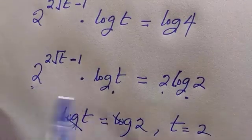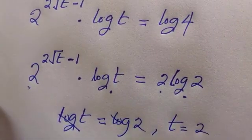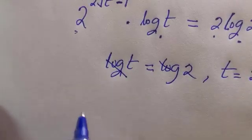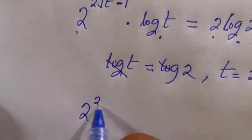So if t equals 2, we consider the second one which is 2 to the power of 2 root t minus 1 equals 2.